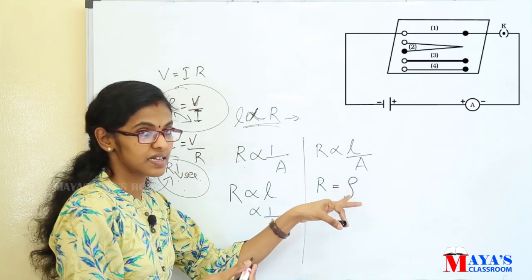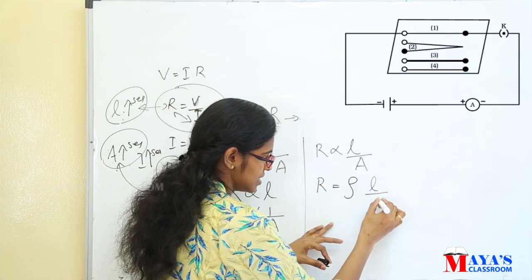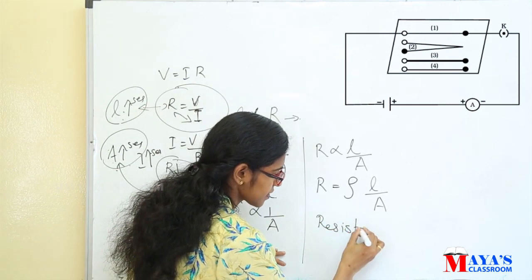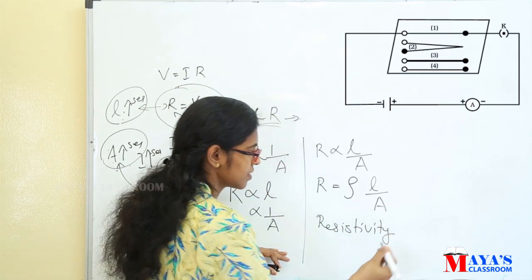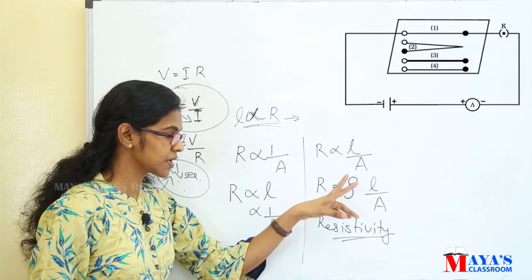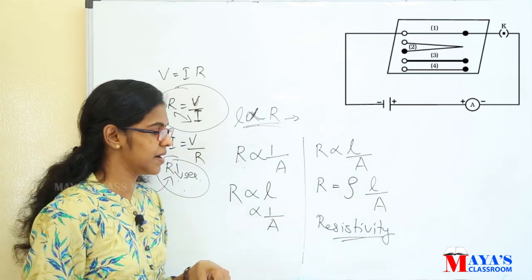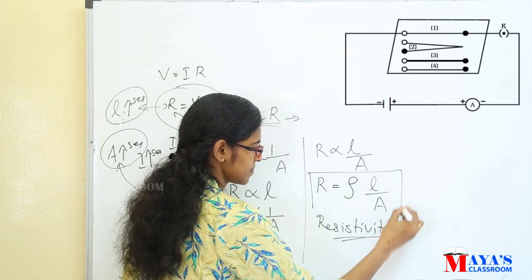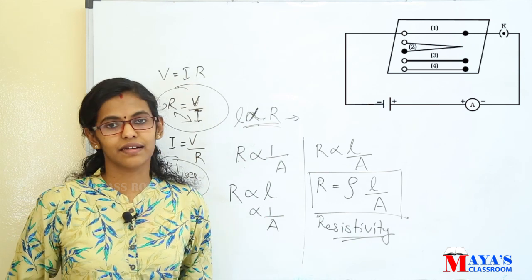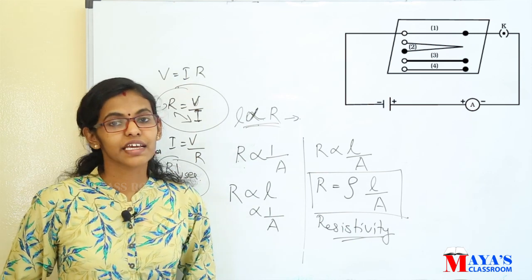That constant is known as resistivity, rho. So R is equal to rho into L by A. This is called the resistivity of the material of the conductor. The resistance of a conductor depends upon the length of the conductor, the area of cross-section of the conductor, and the nature of the material.